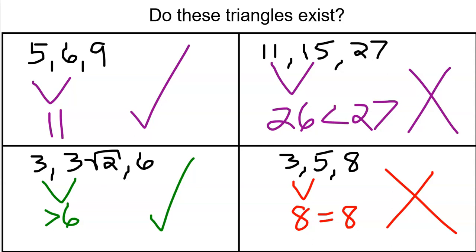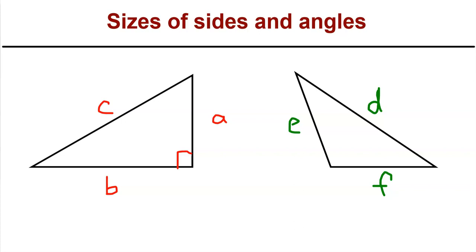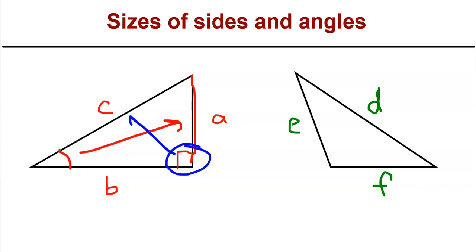There's one other set of inequalities that's important to look at, and that has to do with the relationship between sides and angles. This is something you saw in a GeoGebra exploration — you may have noticed that the smallest angle often appears opposite the shortest side, and the largest angle, in this case the right angle, appears opposite the largest side. The same seems to be true here: side D appears to be the longest side, and the angle opposite side D is the largest angle.